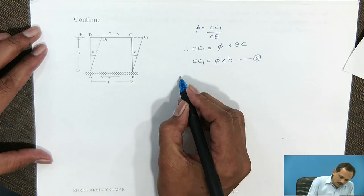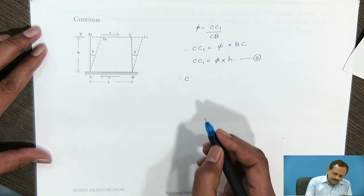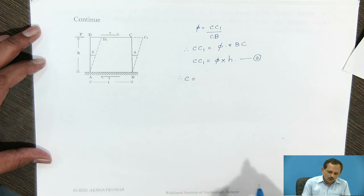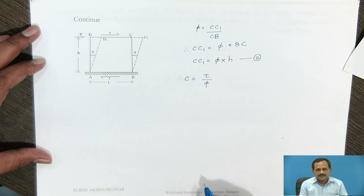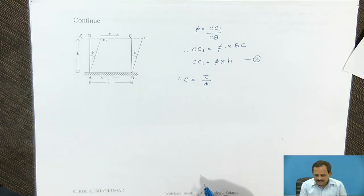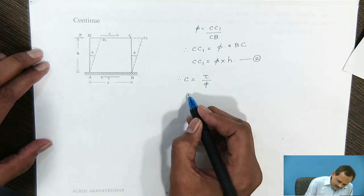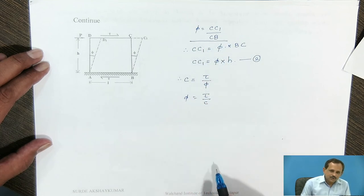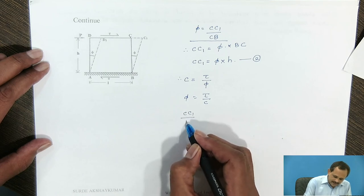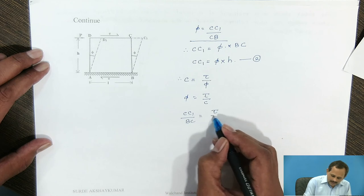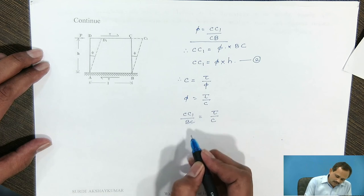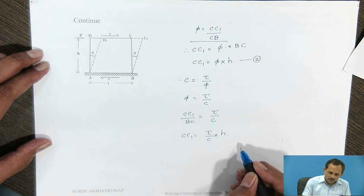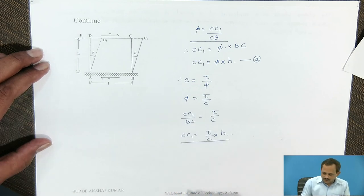Equations 1 and 2 give the value of shear force and shear deformation. The modulus of rigidity, represented by C, is defined as the ratio of shear stress to shear strain. Shear stress is Tau and shear strain is phi. Therefore, phi equals Tau upon C. The shear strain is represented by C, C1 divided by B, C. So C, C1 divided by B, C equals Tau upon C, and therefore C, C1 equals Tau upon C times B, C, which is H.